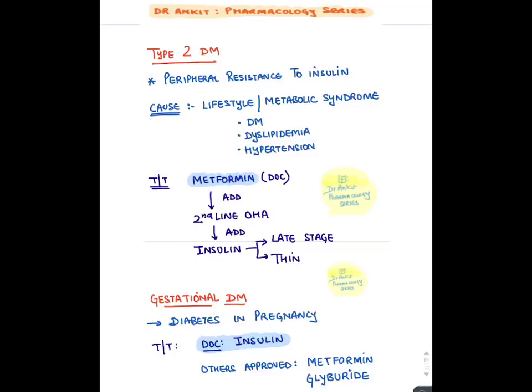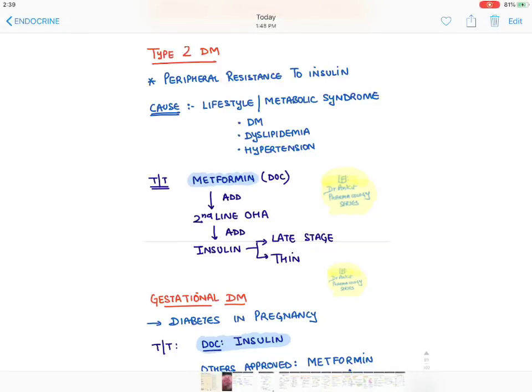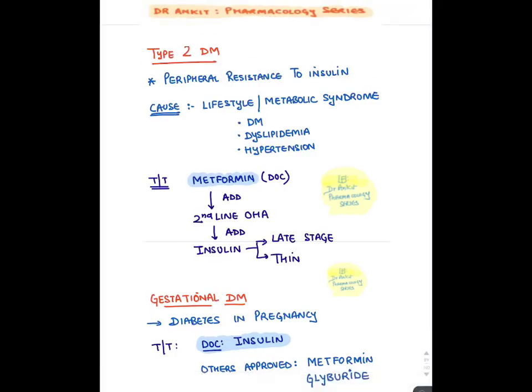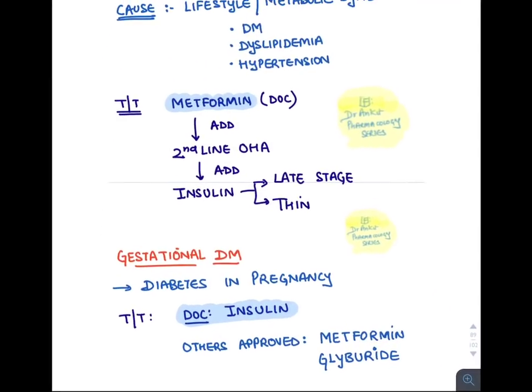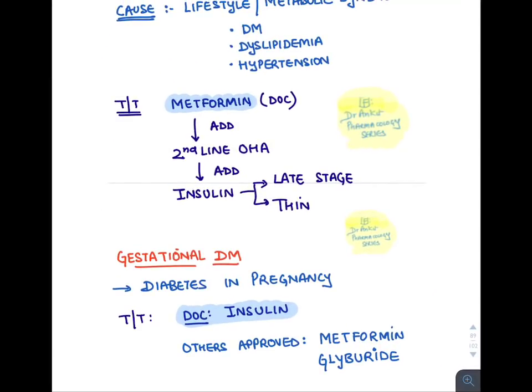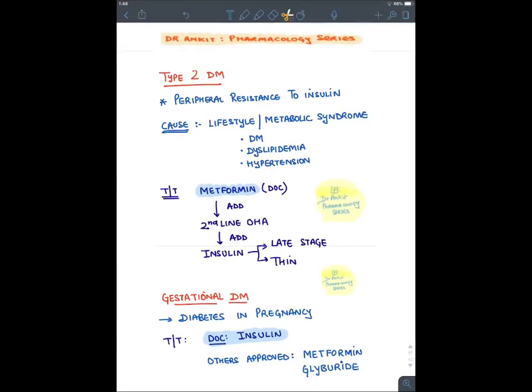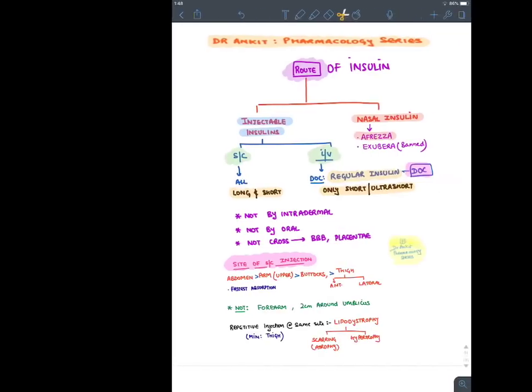If still not controlled, the last resort is insulin. Insulin is preferred in the late stage of diabetes and in thin individuals. For gestational diabetes mellitus — diabetes in pregnancy — the drug of choice is insulin, but two drugs are approved for diabetes in pregnancy: metformin and glyburide.